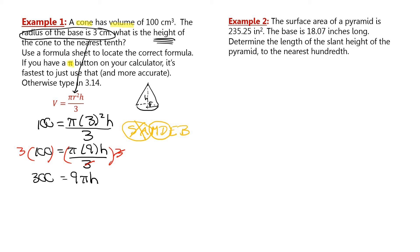Now 9 and pi are both numbers, so I could divide by everything at once. I could divide by 9 and then by pi in separate steps, or since they're being multiplied together I can do two steps in one and divide by 9π. That leaves H isolated on one side, and 300 over 9π on the other.